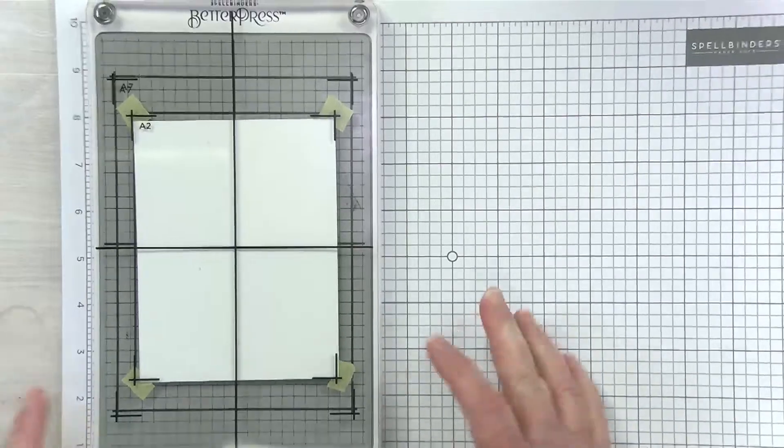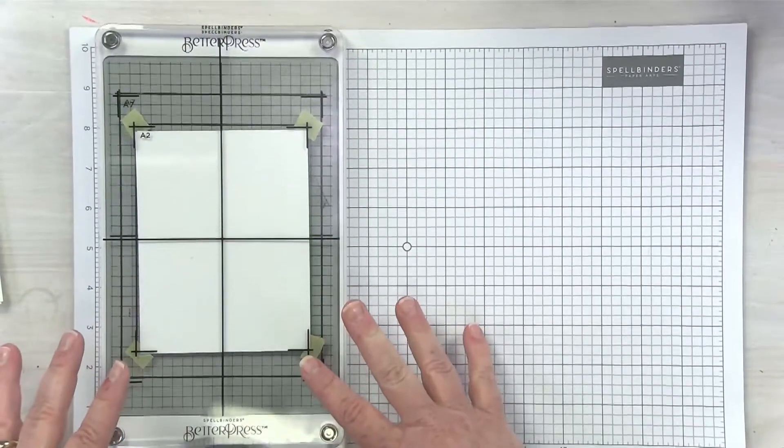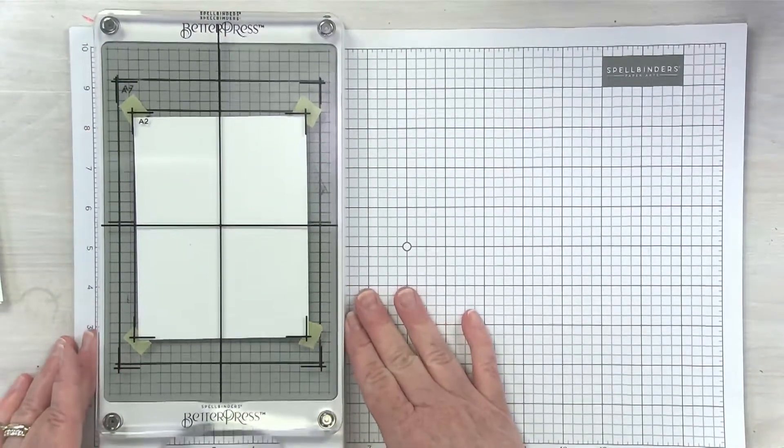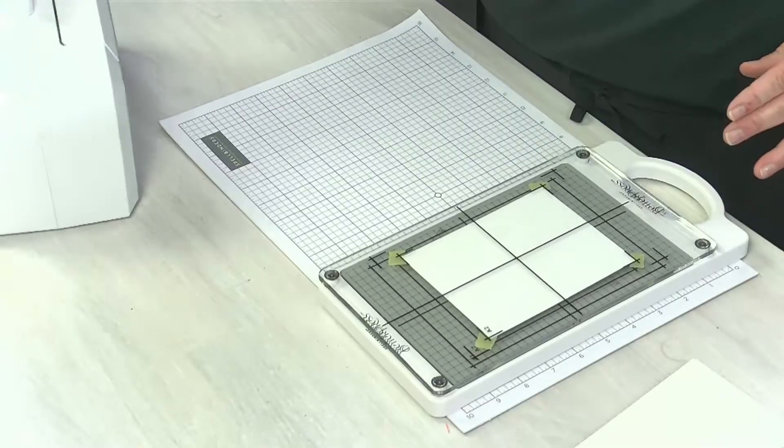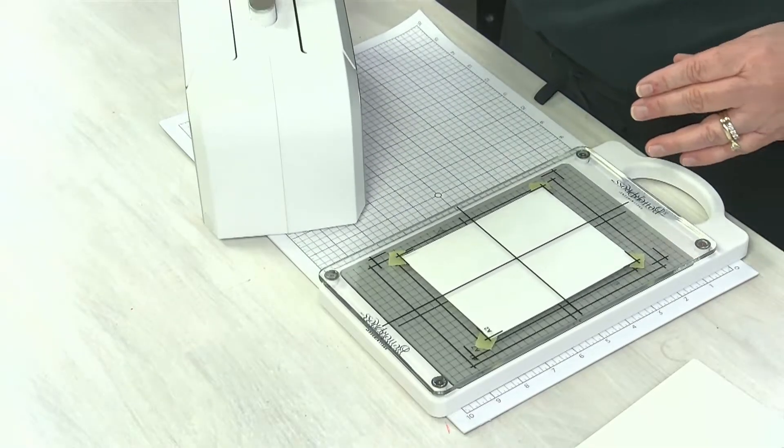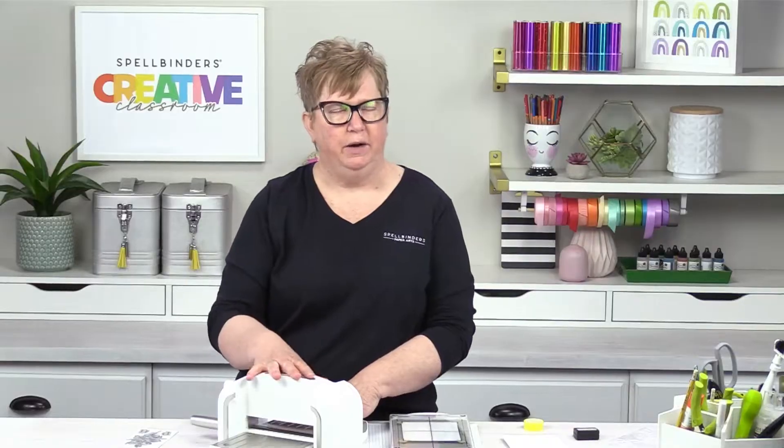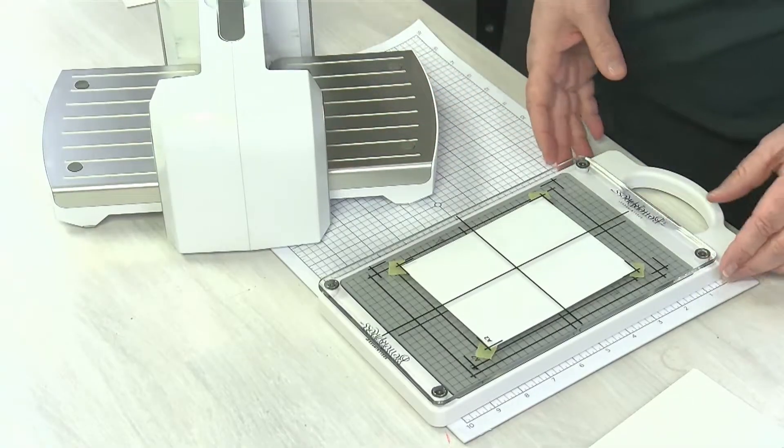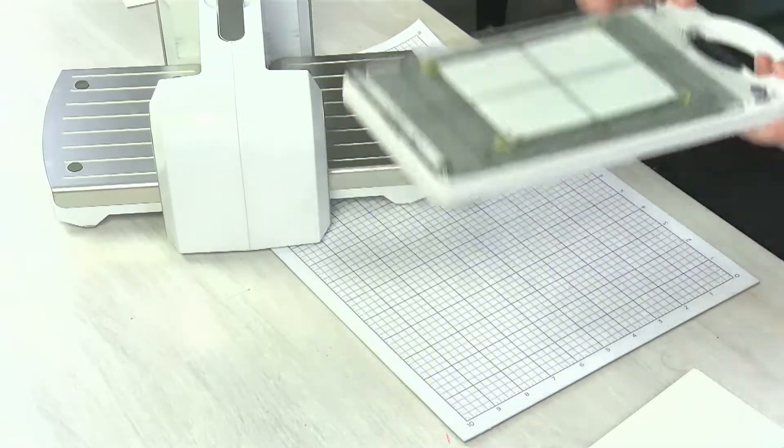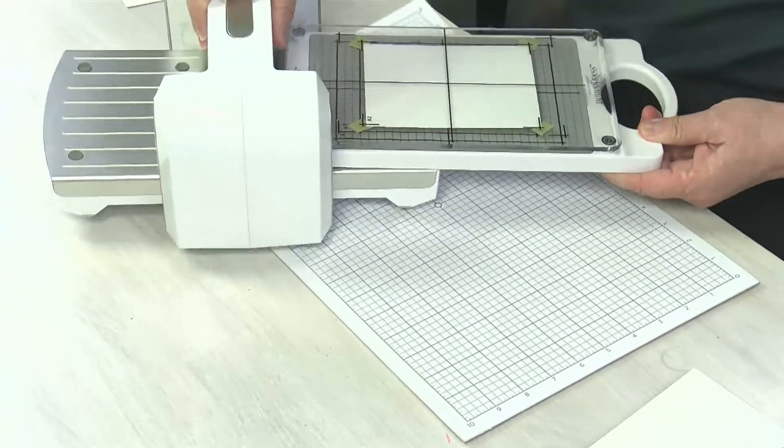The one thing I'll make sure is that I don't push down on this at all until I bring it to my die cutting machine. You will need a compatible die cutting machine to do Better Press. We recommend one of our Platinum machines. This is the Platinum 6, works perfectly with it. Think of the Better Press system as a tool. It combines with your die cutting machine to create the pressure for that perfect letterpress look. I just pop it on the platform here.